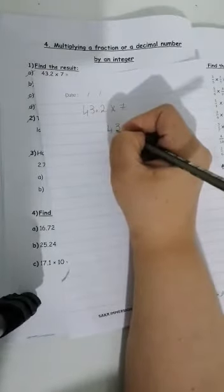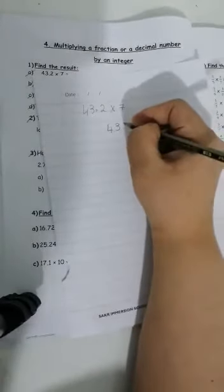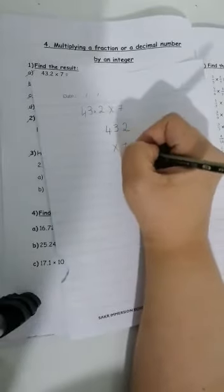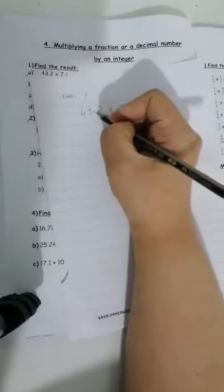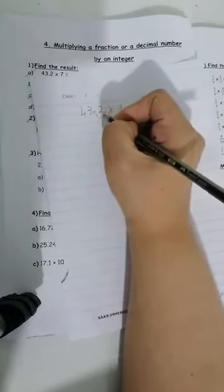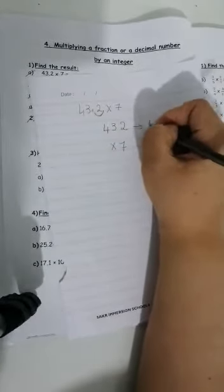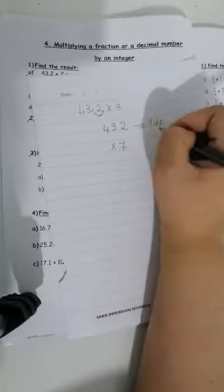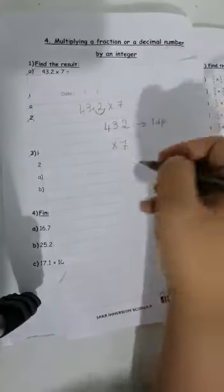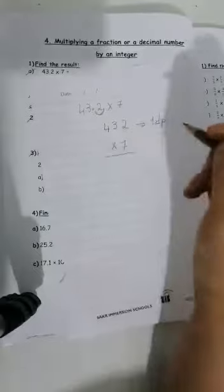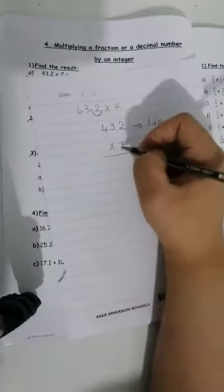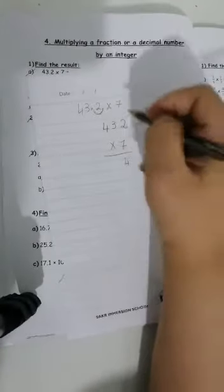43.2 times 7. First thing I will do, I will take it with the work out. 4, 3, forget about the decimal point now, 2, then times 7. I have to check first how many decimal places do I have here. 1 decimal place.